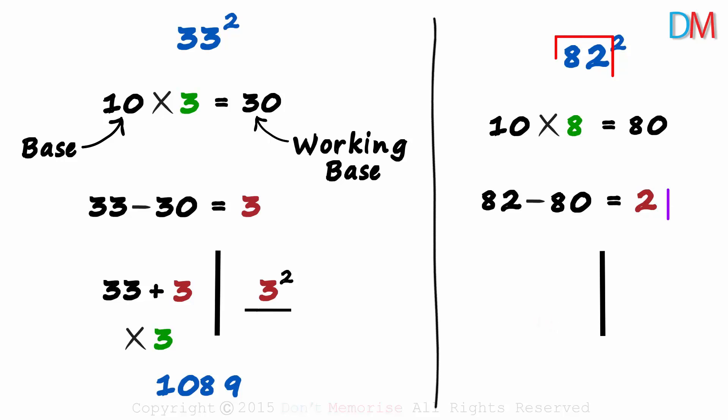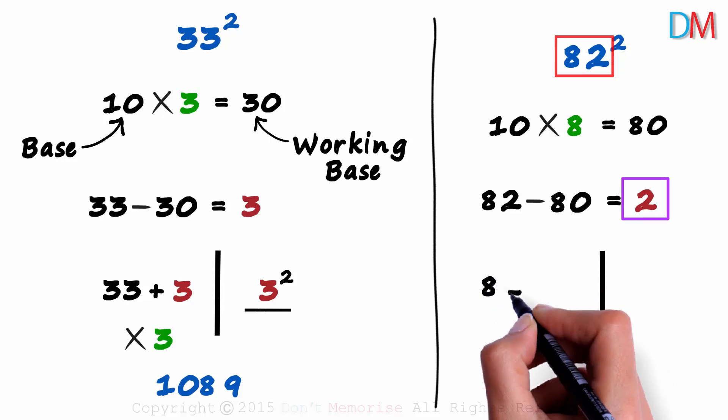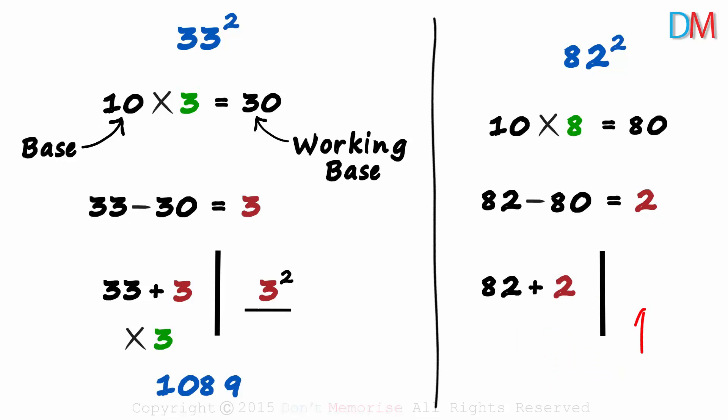On the left, we add the number and this difference: 82 plus 2. And on the right, we square the difference: 2 squared.